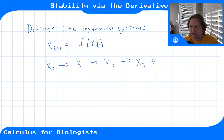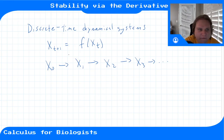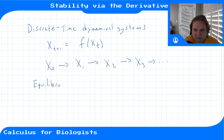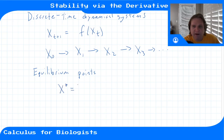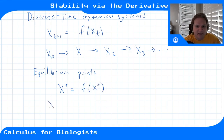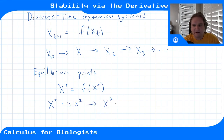An interesting part of these discrete time systems are the equilibrium points — that's a point where once you reach it you're stuck there for all time. An equilibrium point is one where the output of the discrete time system is exactly the input, so if you iterate from x* you get x*, then x*, forever.